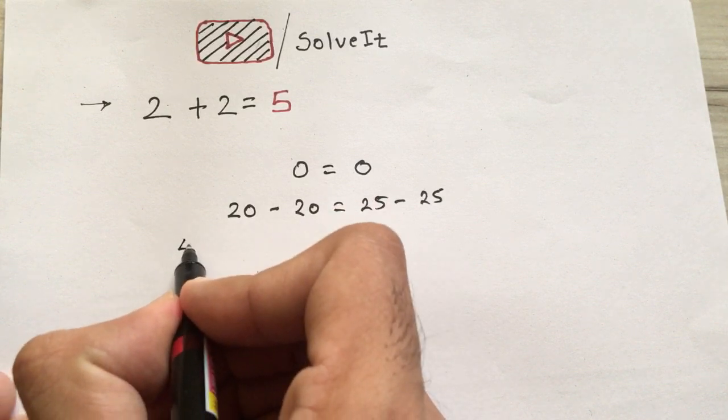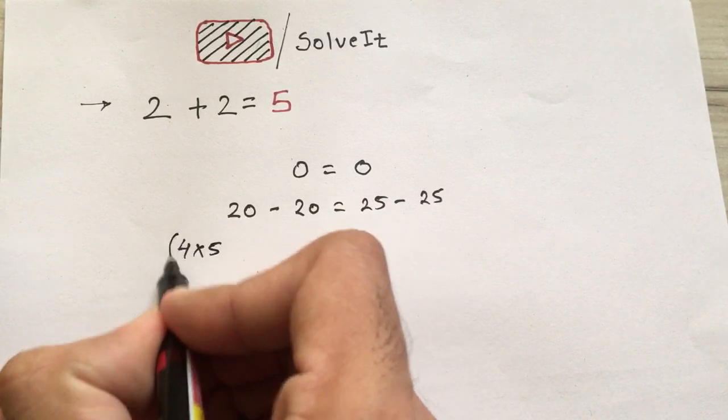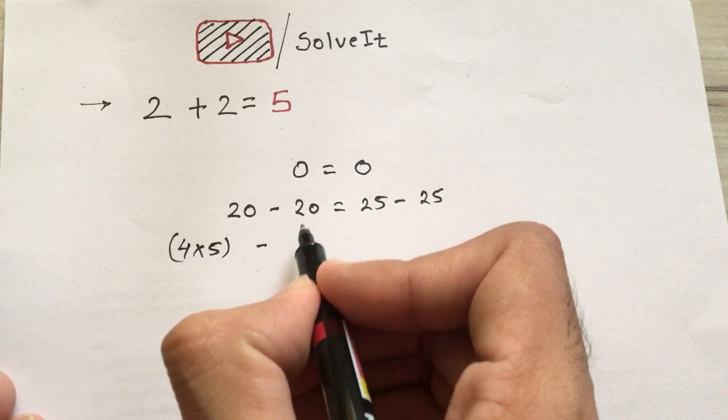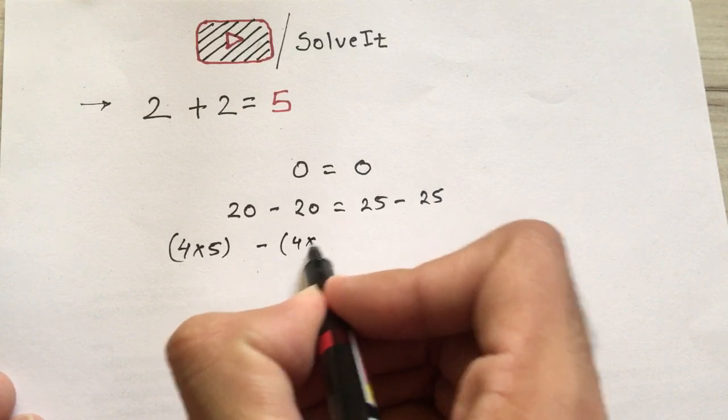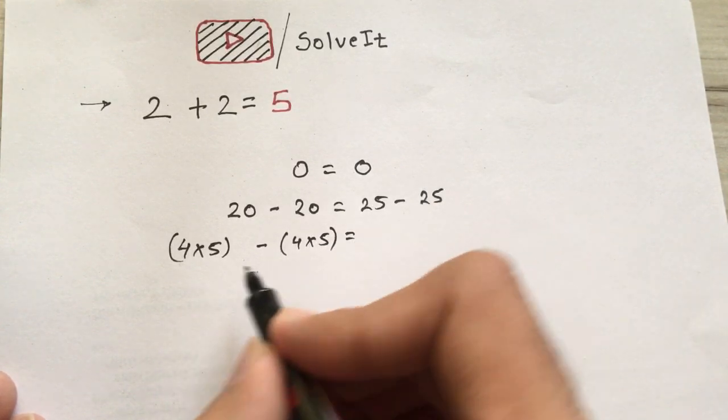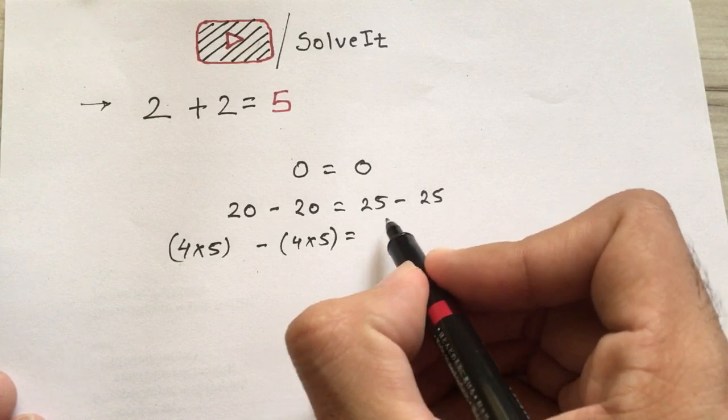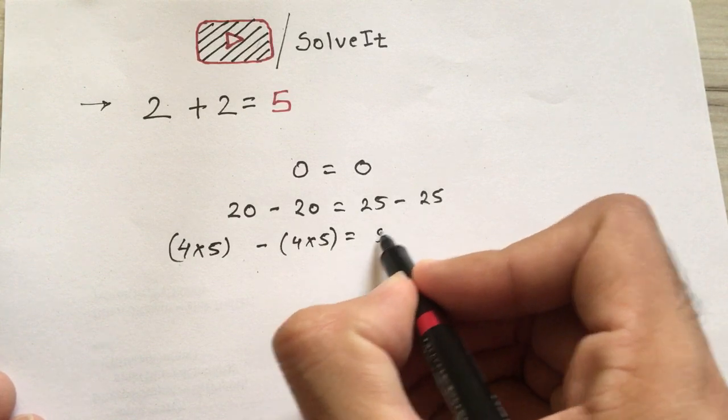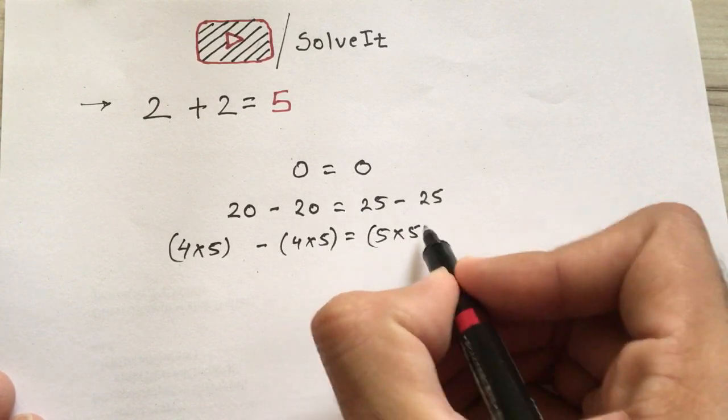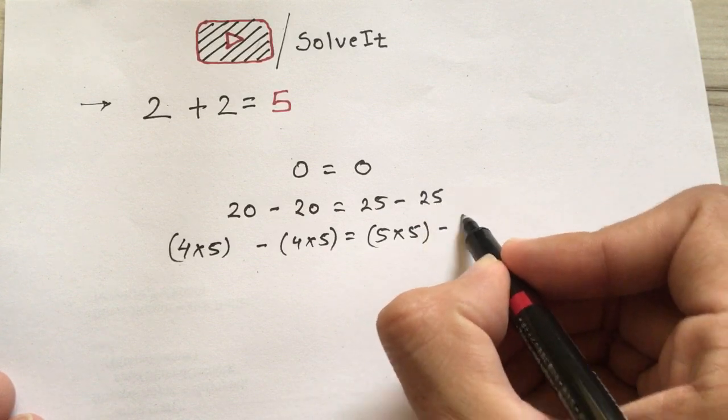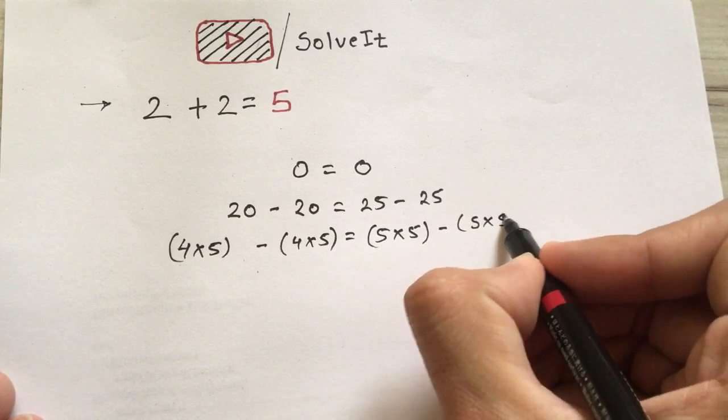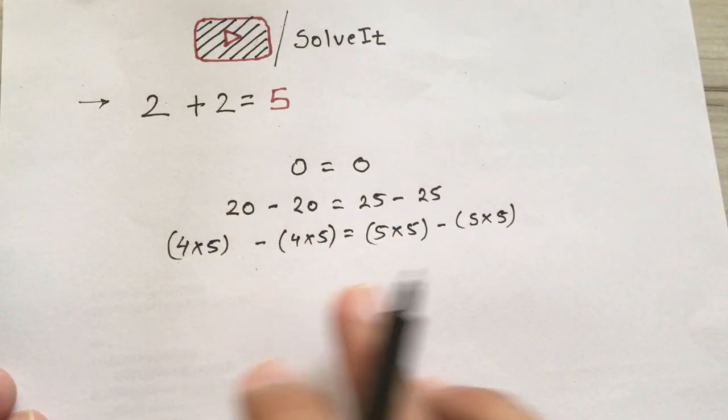So let's see. We can write 20 as 4 times 5 in the bracket, and this 20 as 4 times 5 again, no problem. And 25 we can write it as 5 times 5, minus this 25, 5 times 5.